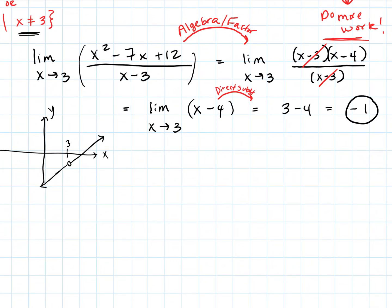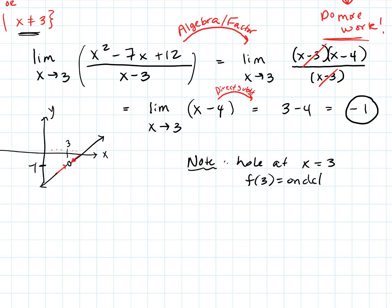Here is x equals 3 on the graph. There's a hole in the graph, but as x approaches 3 from both sides, the function is actually approaching negative 1. Note: there's a hole at x equals 3, and f of 3 is undefined — 3 does not live in the domain of this function.